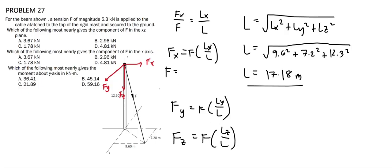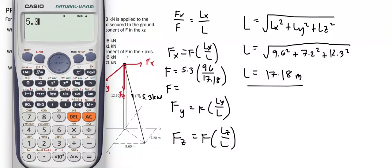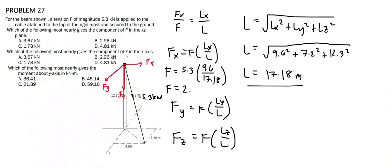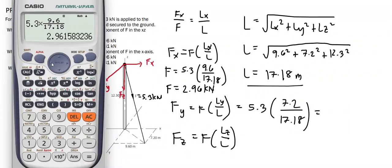So fx is equal to the force of magnitude 5.3 kN times lx (9.6) divided by L (17.18), which gives fx = 5.3 × 9.6 / 17.18 = 2.96 kN. And to solve for fy, we have 5.3 times ly (7.2) divided by L (17.18), which gives fy = 2.22 kN.